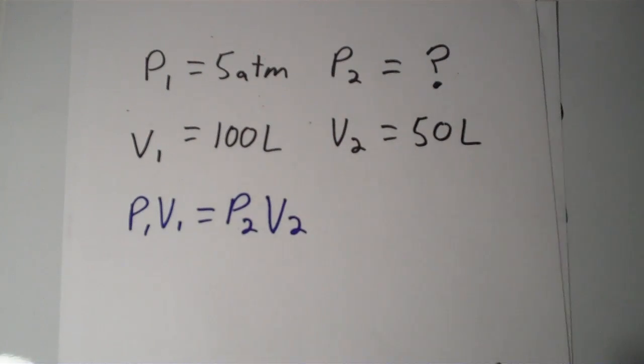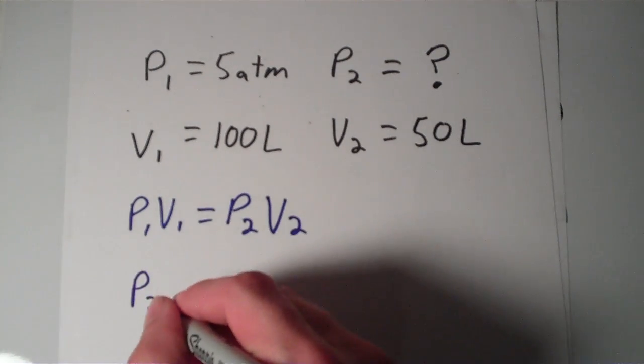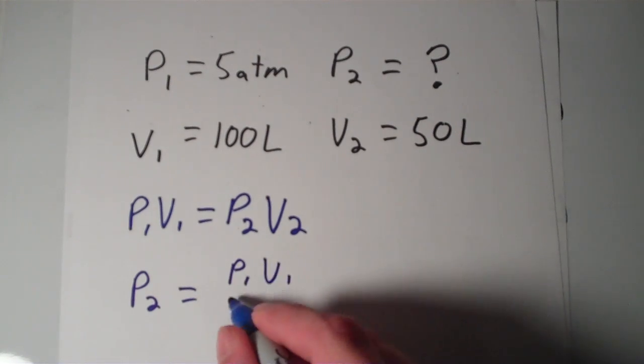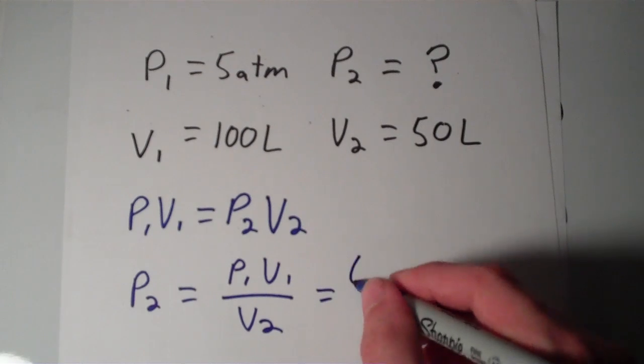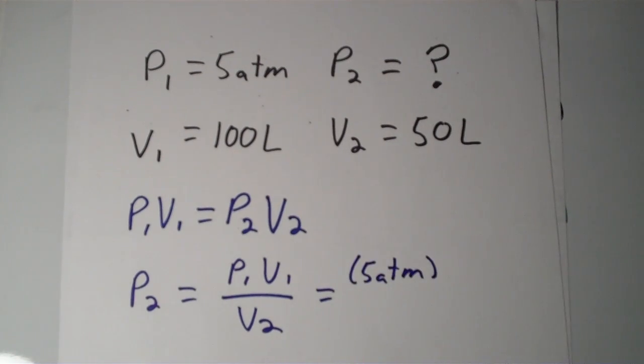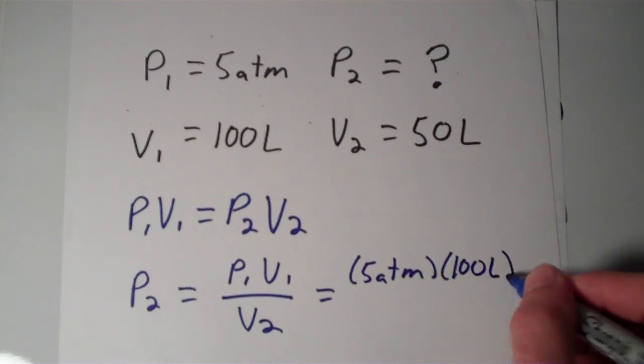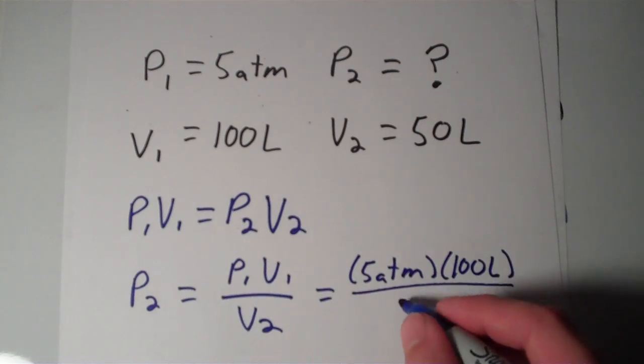We're looking for P₂, so I'm going to divide the whole equation by V₂. And I'm going to get that P₂ is equal to P₁ times V₁ over V₂. And P₁ is 5 atmospheres, and V₁ is 100 liters, and V₂ is 50 liters.